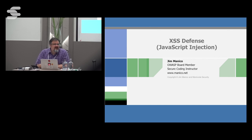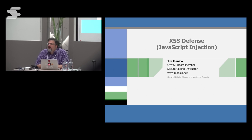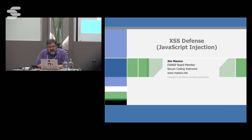Hello everyone. We're going to talk about cross-site scripting from a couple of different perspectives. This is really about user interface security — how do you build a good web-enabled user interface to stop the main kind of injection that we see: JavaScript injection, where the attacker can inject their own JavaScript into your site in some way?